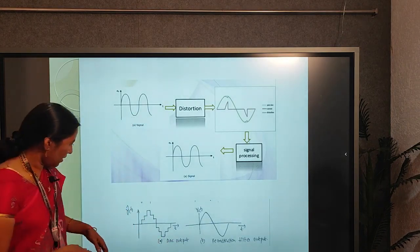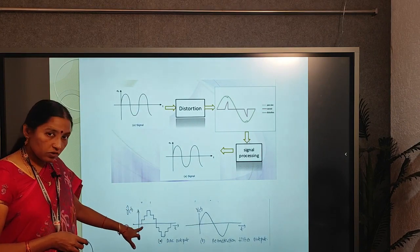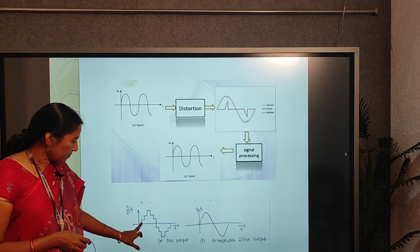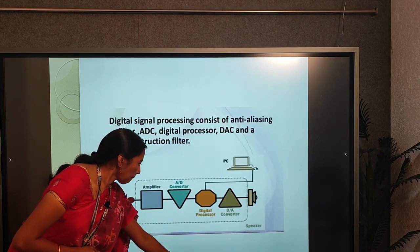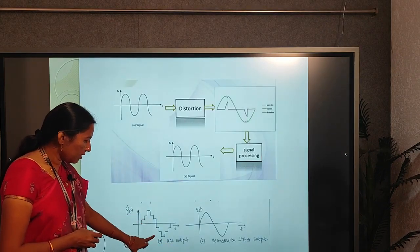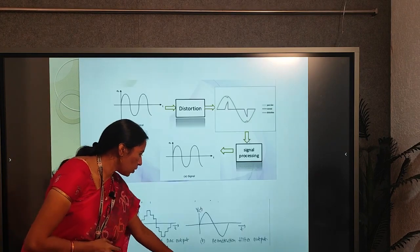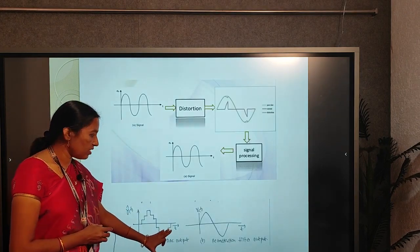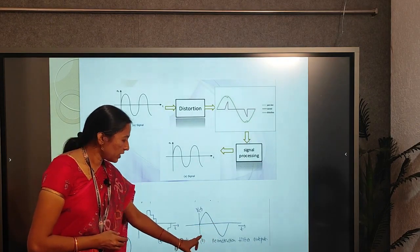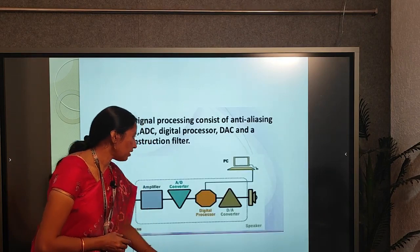In the previous diagram, whenever we use the D-to-A converter it gives a signal with some distortion. To remove that distortion, the reconstruction filter is used, giving a smooth output signal.